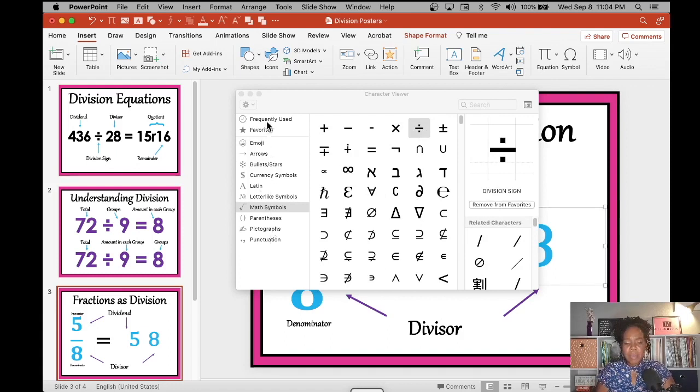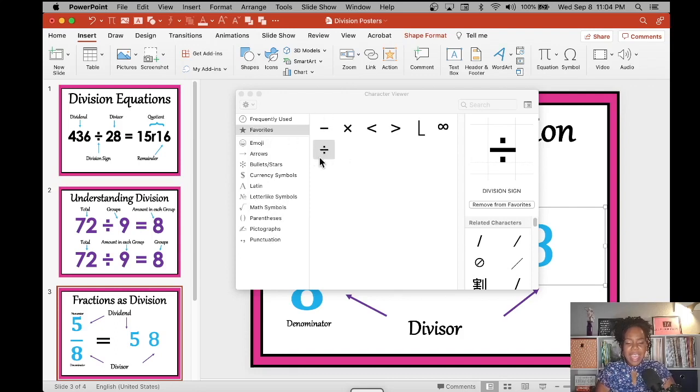So now I'm going to go back over to my menu on the left, click on favorites. And my division sign is there as well as that infinity symbol that I added in.